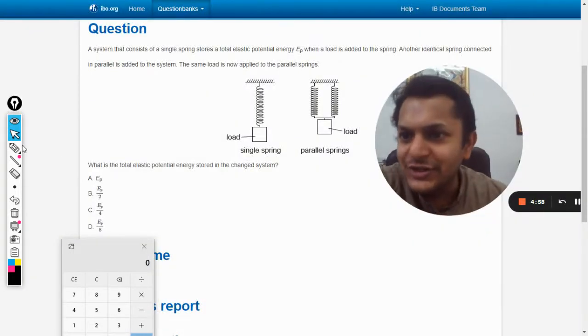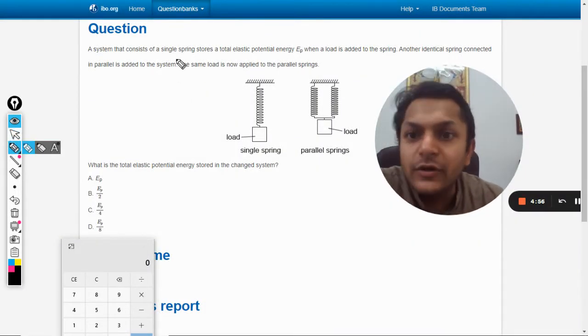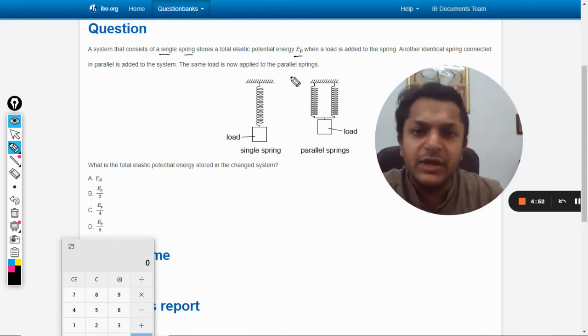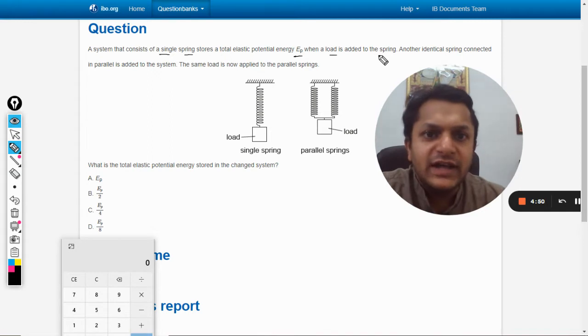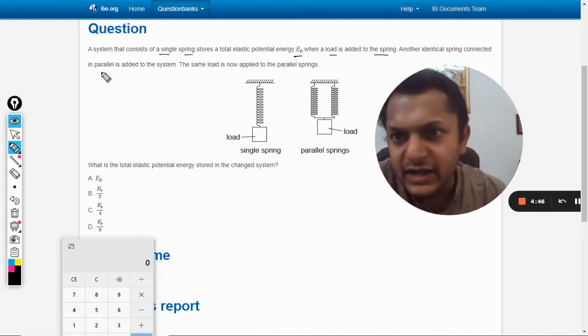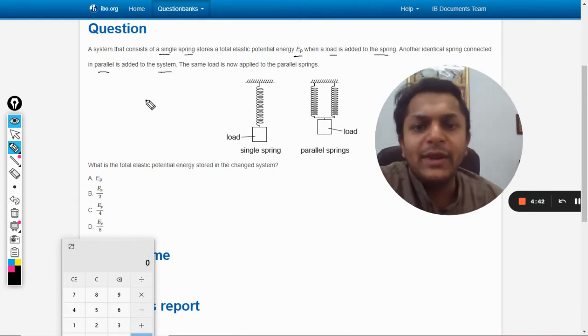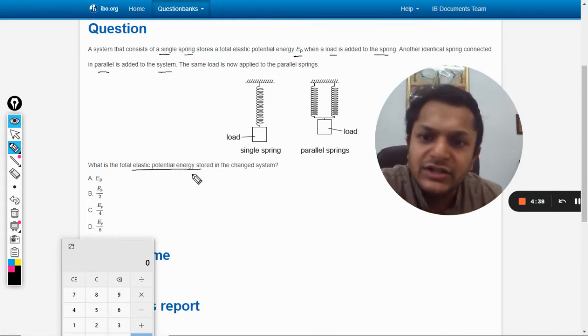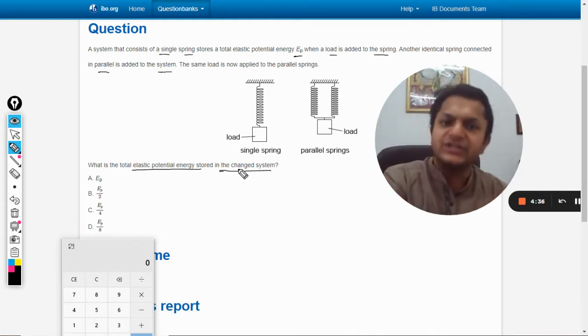Okay, so in this question a system that consists of a single spring stores total elastic potential energy E_p when a load is added to the spring. Another identical spring connected in parallel is added to the system. The same load is now applied to the parallel springs. What is the total elastic potential energy stored in the changed system?